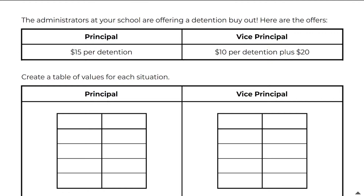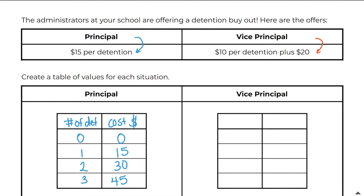In this example, the administrators are offering a detention buyout. The principal will charge $15 per detention, and the vice principal will charge $10 per detention but with an initial fee of $20. Let's create a table of values. For the principal, looking at number of detentions versus cost: zero detentions costs $0, one detention is $15, two detentions is $30, and three detentions is $45.